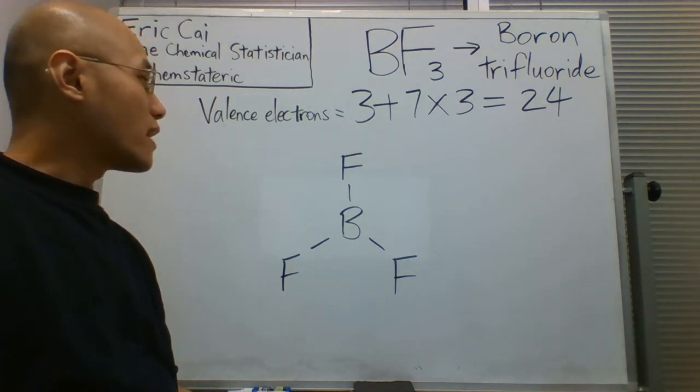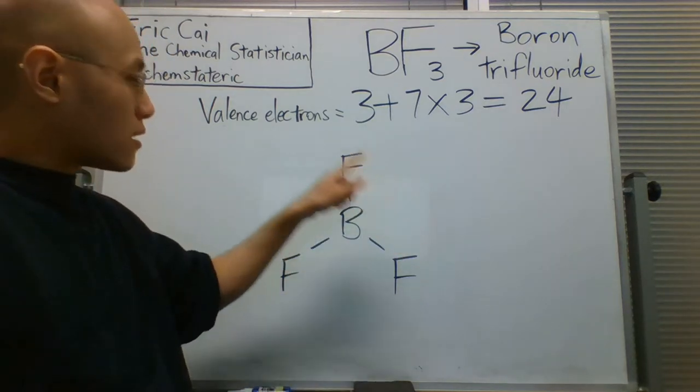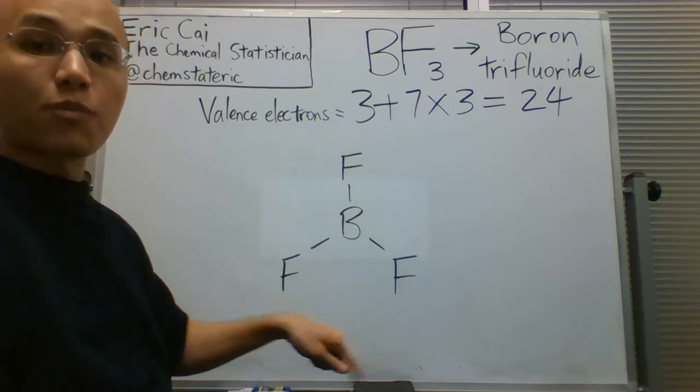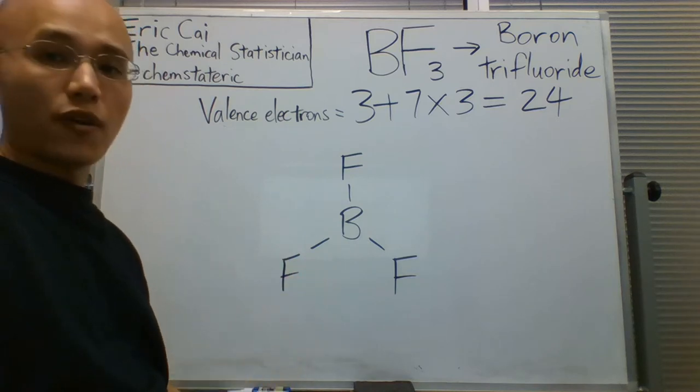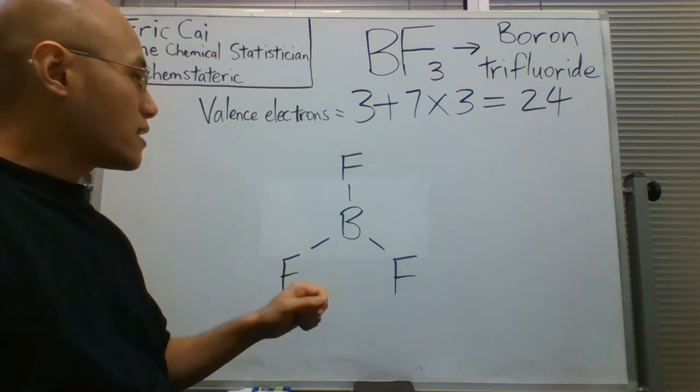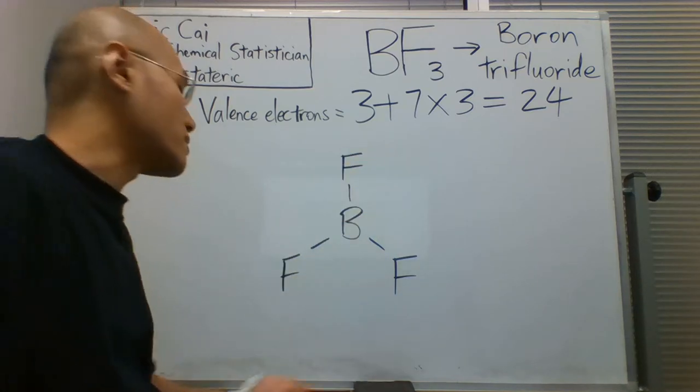A good idea at this point is to assume that those remaining 18 are distributed to the atoms on the periphery, to the three fluorine atoms on the periphery. 18 divided by 3 is 6, so we can put six electrons in each of the fluorines.